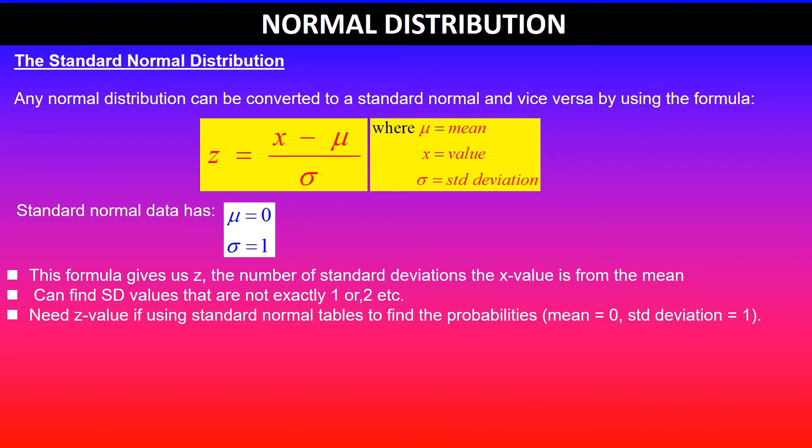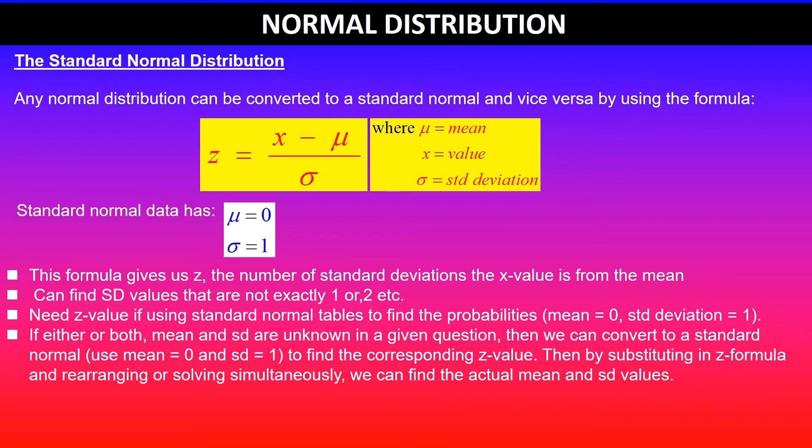Where mean will be 0 and standard deviation is 1. And also if either or both mean and standard deviation are unknown in a given question, then you can use this formula to convert it to a standard normal and find the corresponding z value.